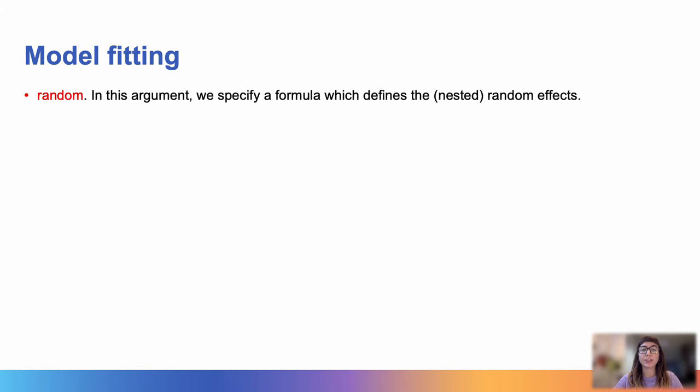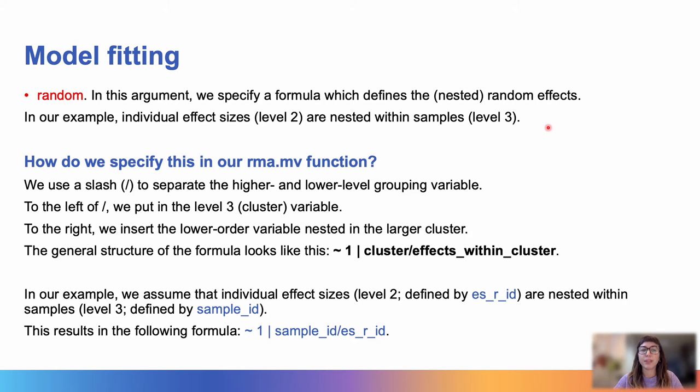Random is actually the most important argument for our function because it is where we specify that we want a nested random effects model. In our example, just as a reminder, individual effect sizes represent level 2, and they are nested within samples which represent level 3. So, how do we specify this in our function?